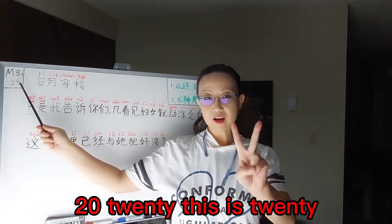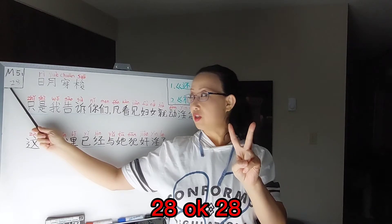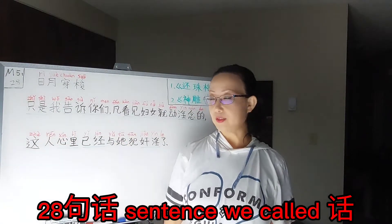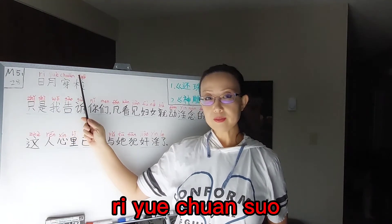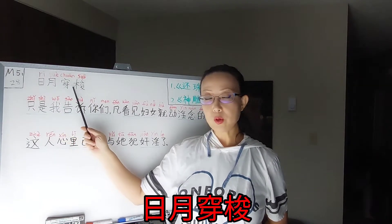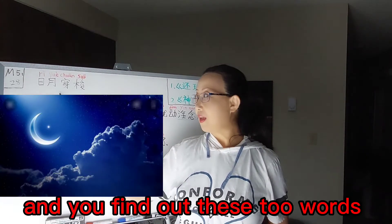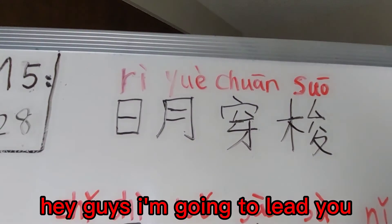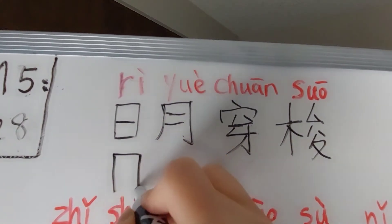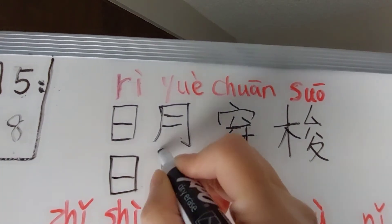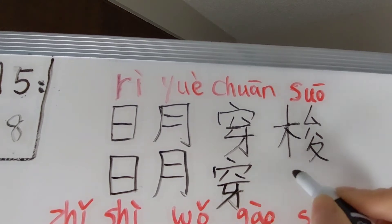OK, we have 第二十八句话 — 二十 is twenty. And we have a new 成语: 日月穿梭. I give you two clues — 日 is 'sun', 月 is 'moon'. Find out what these two words mean together. I'm going to lead you to write this 成语: 日月穿梭.